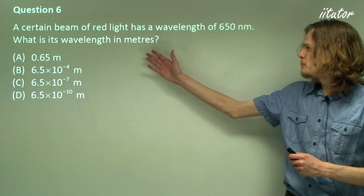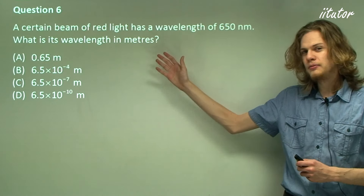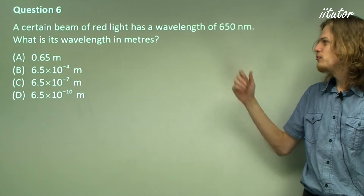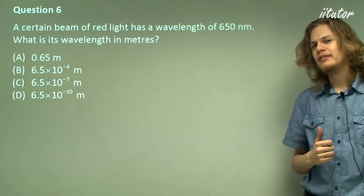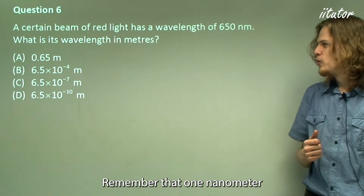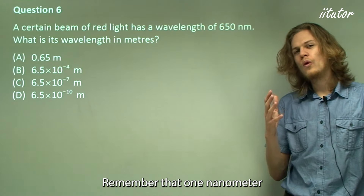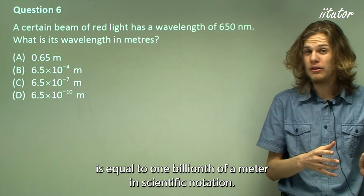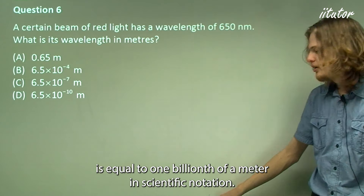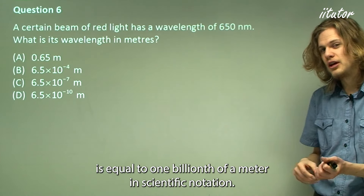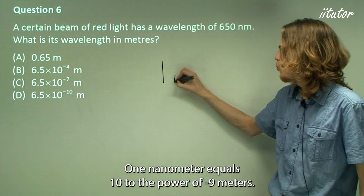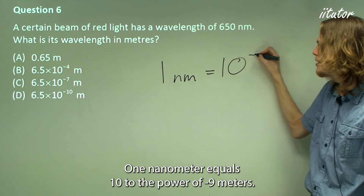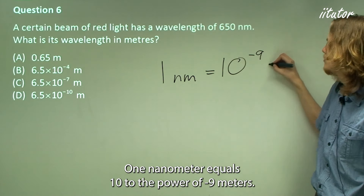Question 6: A certain beam of red light has a wavelength of 650 nanometers. What is its wavelength in meters? Remember that one nanometer is equal to one billionth of a meter, and in scientific notation, one nanometer equals 10⁻⁹ meters.